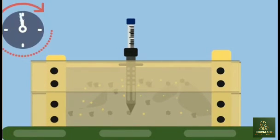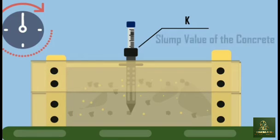After 60 seconds, lower the measuring rod slowly until it rests on the surface of the mortar that entered the tube. Note down the value on the graduated scale. Take it as K, which denotes the slump value of the concrete.